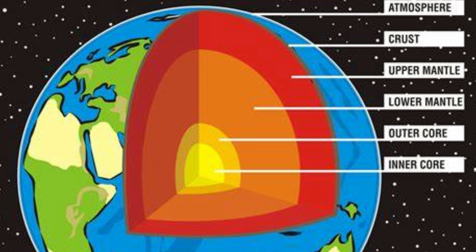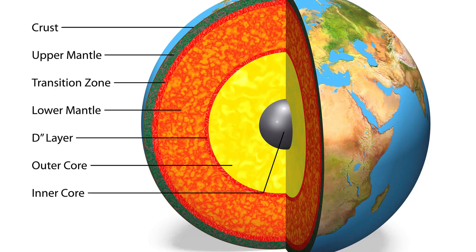Primordial heat refers to the heat left over from the formation of the Earth around 4.5 billion years ago. During the planet's formation, kinetic energy from collisions and the gravitational contraction of the planet's material was converted into thermal energy. This heat has been retained over billions of years due to the Earth's insulating layers.